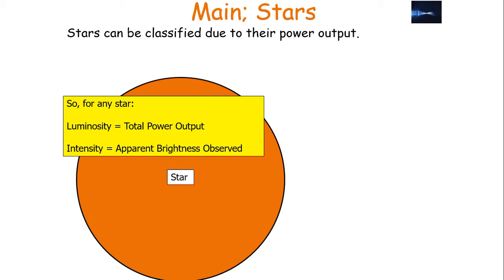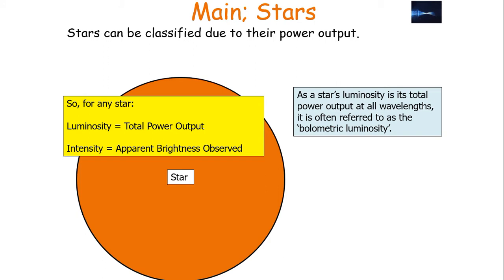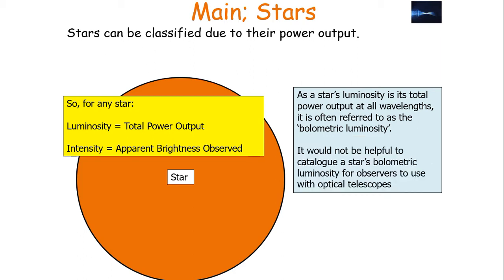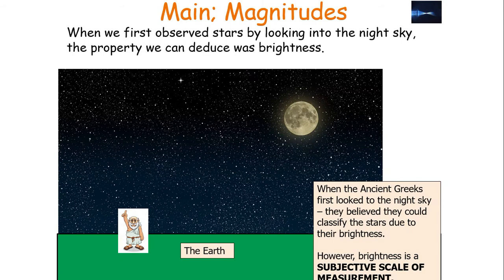To clarify: for any star, the luminosity is the total power output, but its intensity is the apparent brightness observed by the observer. As a star's luminosity is the total power output at all wavelengths, we often refer to it as the bolometric luminosity. It wouldn't be helpful to catalogue a star's bolometric luminosity for observers using optical telescopes, so we consider what we call the visible luminosity.